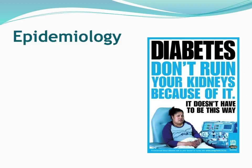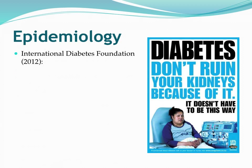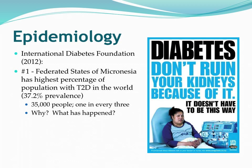Let's talk about the epidemiology of diabetes here in the Pacific region. As of 2012, the International Diabetes Foundation ranked countries worldwide in terms of their public health burden of type 2 diabetes. What they found was that the Federated States of Micronesia — Ponpe, Chuk, Yap, and Koshri — have the highest percentage of the population with type 2 diabetes in the world, at 37.2% prevalence.